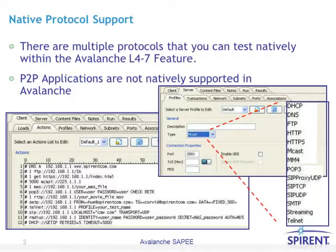There are multiple protocols that you can test natively within the Avalanche L4-7 feature. Just by selecting the Server Profiles tab, you can select the type from the pull-down menu — whether it's a multicast, an FTP, or an HTTP server — quickly and easily, just by selecting it from the pull-down menu, you then will create that type of server.